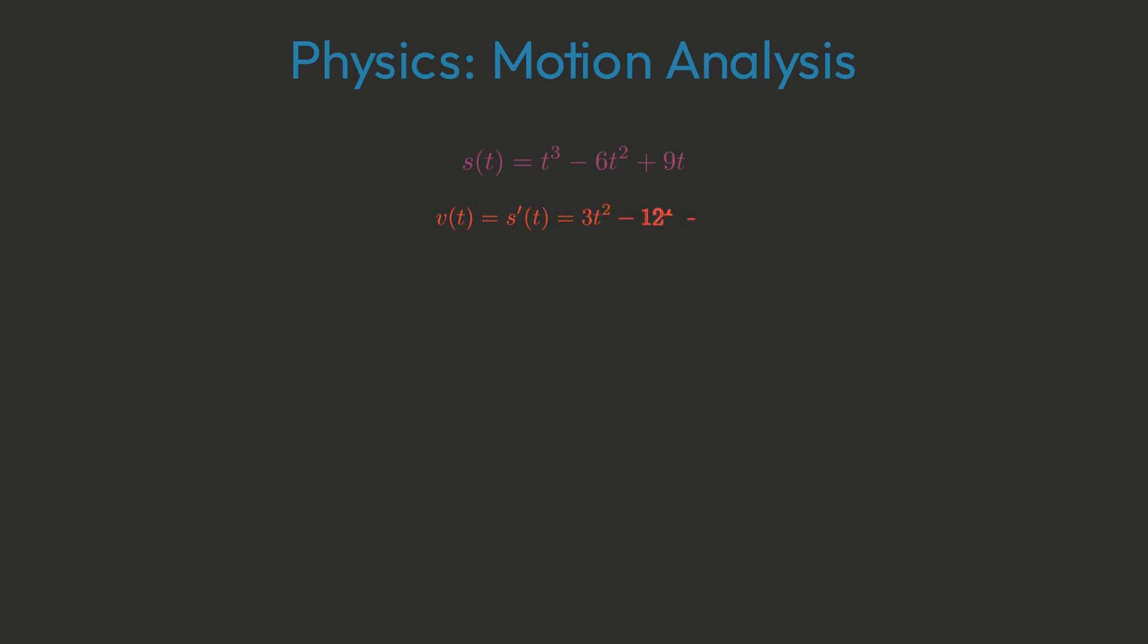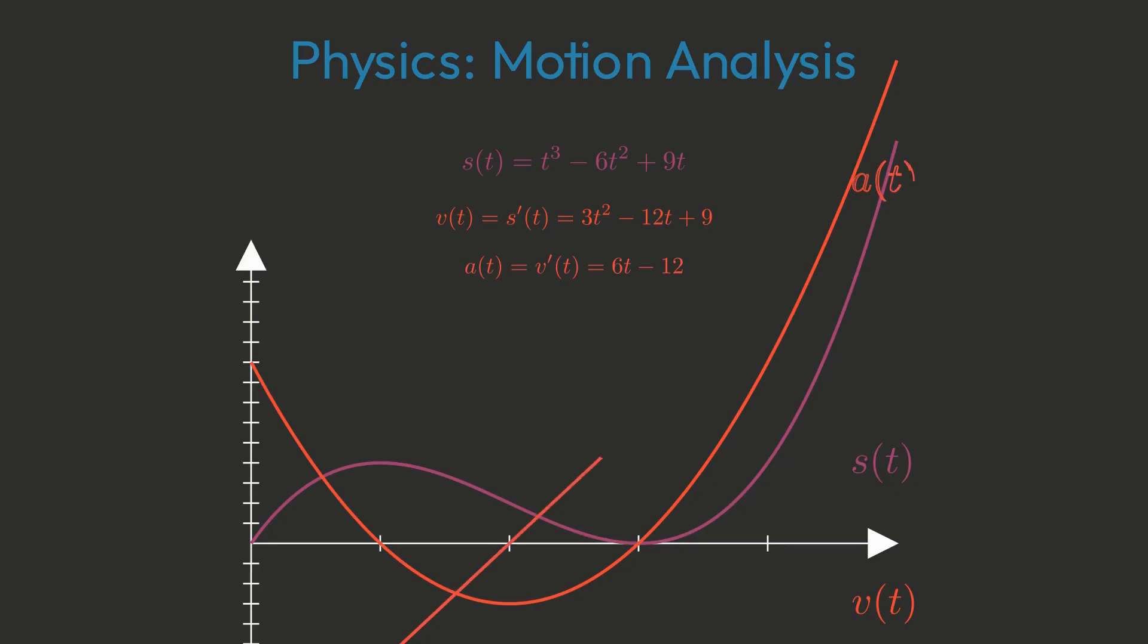In physics, if the displacement is s of t equals t cubed minus 6t squared plus 9t, then its derivative, velocity, is v of t equals 3t squared minus 12t plus 9. The derivative of v of t gives us a of t.